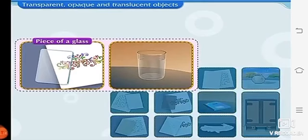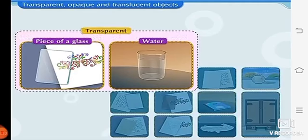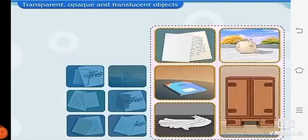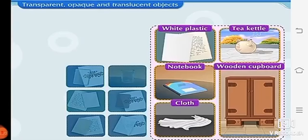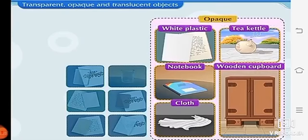Piece of glass and water are said to be transparent objects because we can see clearly through it. White plastic, tea kettle, notebook, cloth, wooden cupboard are said to be opaque objects because we cannot see through it.